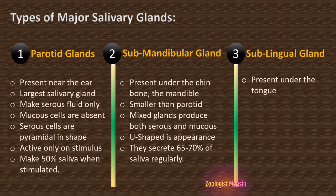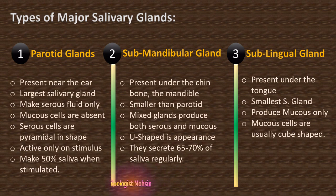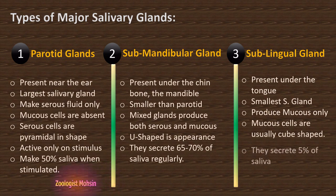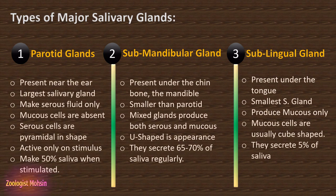The third major salivary gland is the sublingual gland, present under the tongue. It is the smallest major salivary gland and produces mucus only. To summarize the comparison: parotid — serous only; submandibular — mixed (serous and mucus); sublingual — mucus only. Mucus cells are usually cube-shaped. The sublingual gland secretes about 5% of saliva, as it is very small in size. This comparative approach will help you learn the differences between all three major salivary glands for exams.